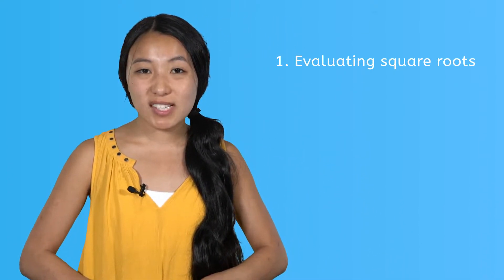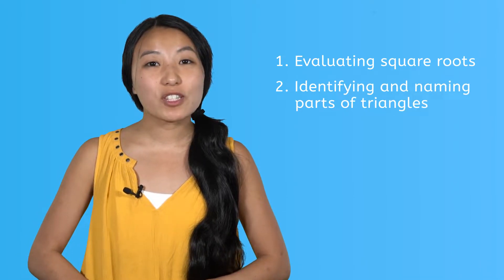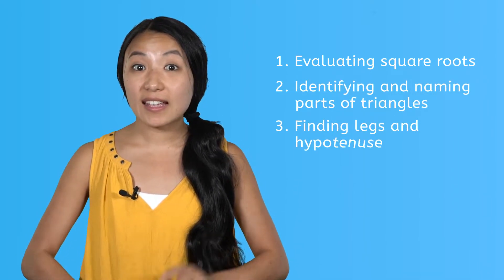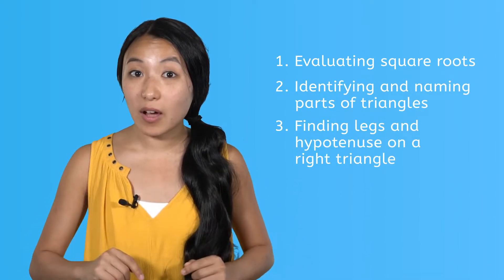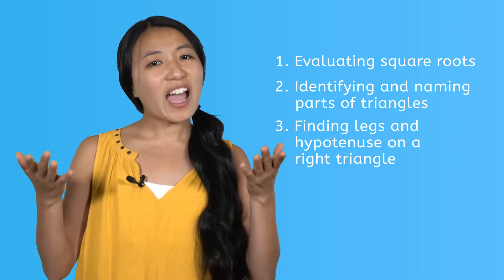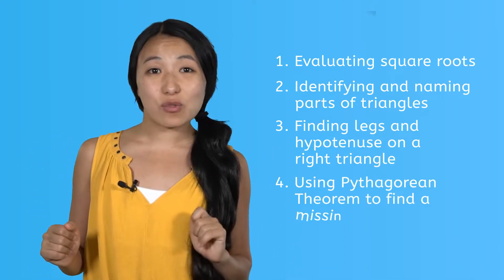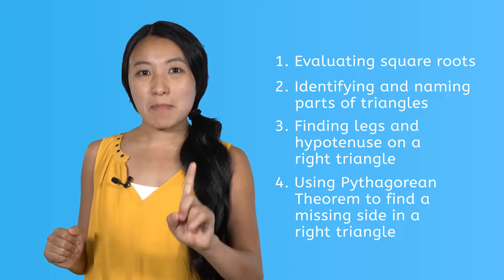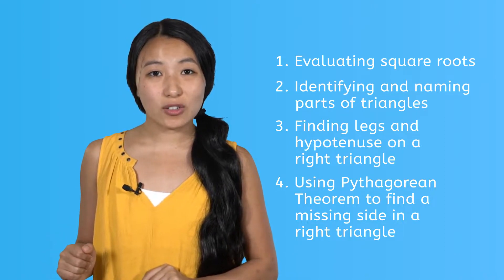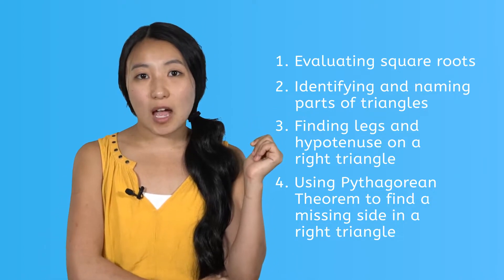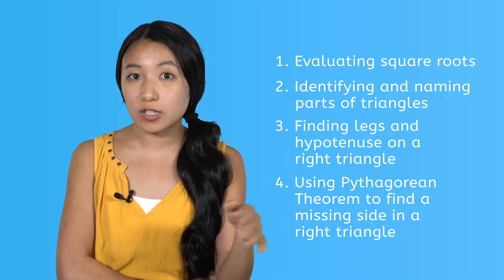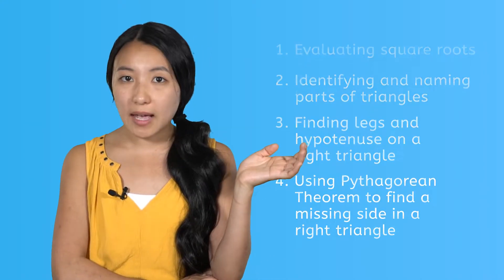Hey everyone, it's Caroline. You have learned so much throughout this unit. By now you're an expert at evaluating square roots, identifying and naming parts of triangles, finding the legs and hypotenuse on a right triangle, and you can even use the Pythagorean theorem to find a missing side in a right triangle. Sure, these topics are all going to be very important throughout future math classes.